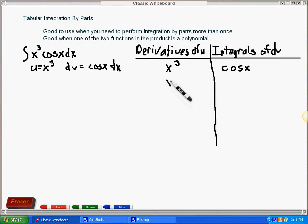I'm actually going to rewrite the x to the third one more time before I take the derivative. The way this works is you start out again, letting u be the top of the first column, dv be the top of the second column. And then the left column, we repeatedly take the derivative after we rewrite it once. I take x to the third, I rewrite it. Then I take its derivative, which of course is 3x squared. Then I take its derivative again, which is 6x. Then I take its derivative again, which is 6.